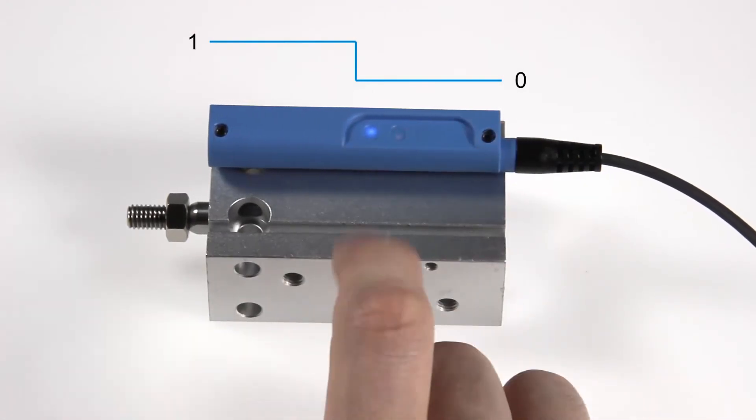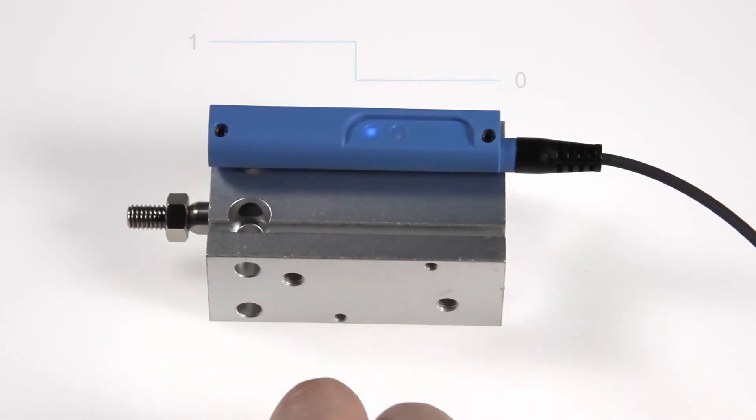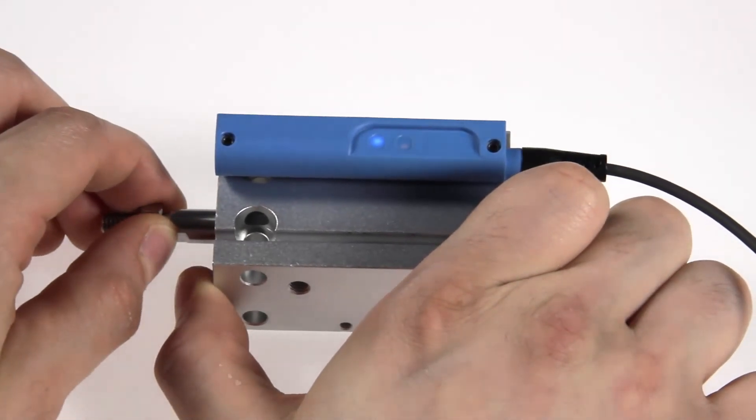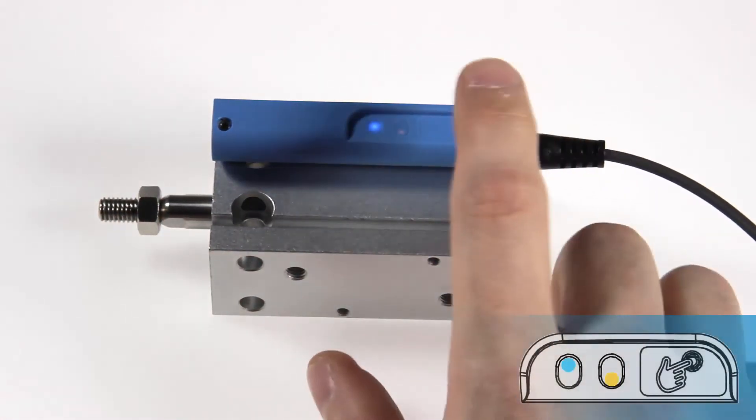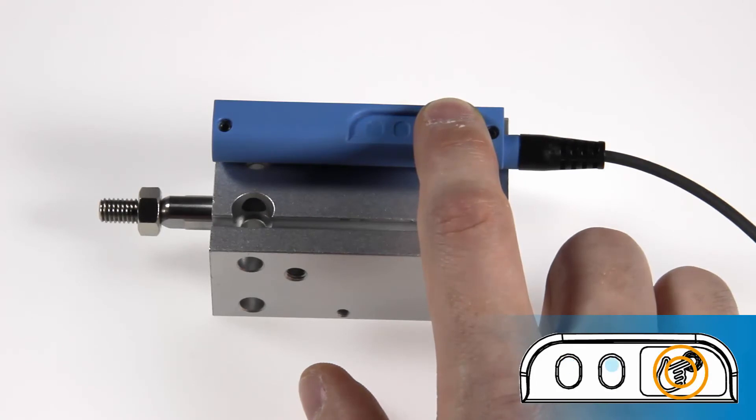For setting the switching point, move the piston to the desired switching point. Press the keypad and hold the keypad between 11 and 15 seconds.